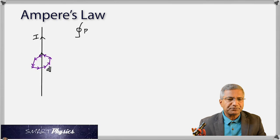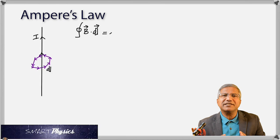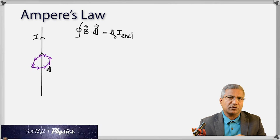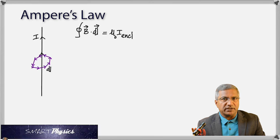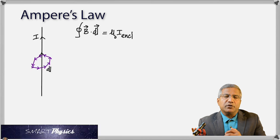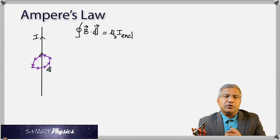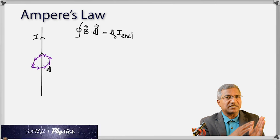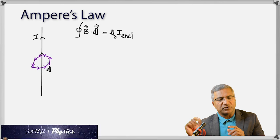I should be the current inside the path that we have picked. It's important to remember that we only consider the current inside that path — if there is a current outside that path, it contributes zero. Let me now apply this first in the case of a straight conductor.